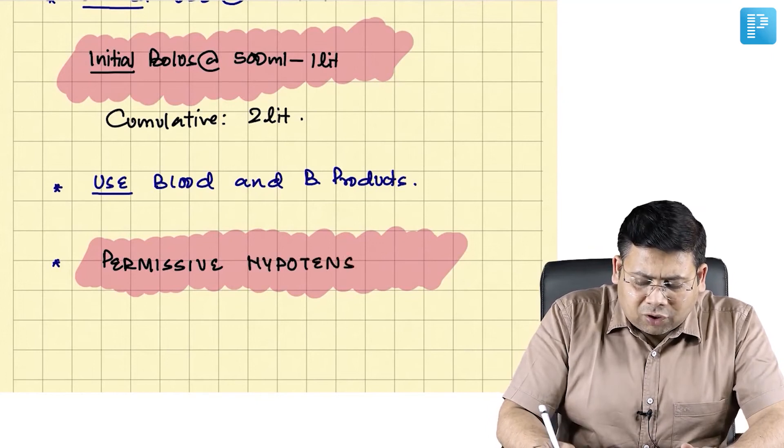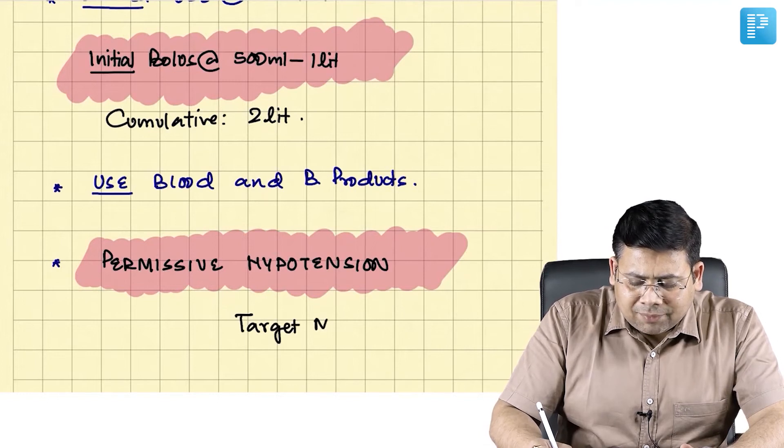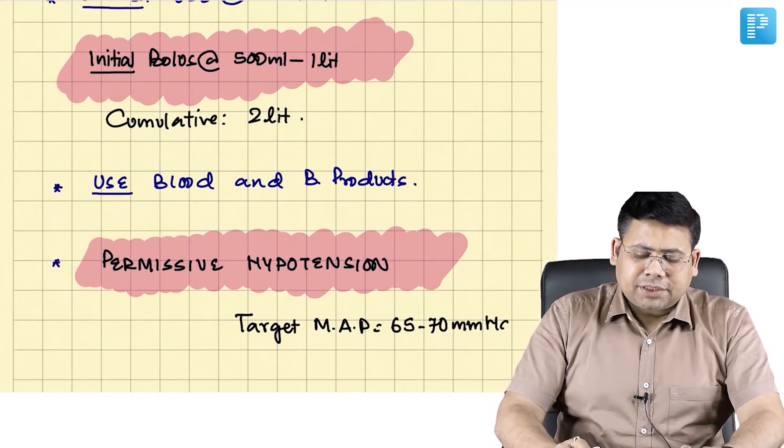Why is this known as permissive hypotension? Because you are allowing this hypotension. When we talk about permissive hypotension, what is the target MAP? The target mean arterial pressure is roughly around 65 to 70 mmHg.